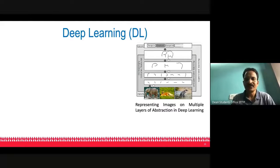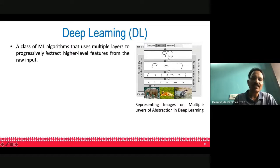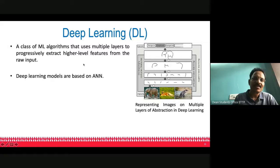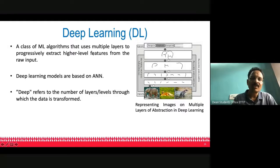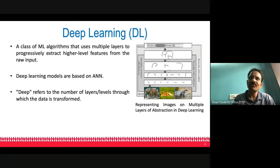Deep learning models are based on artificial neural networks, which mimic our brain. The word 'deep' in deep neural networks means there are a number of layers or levels through which data is transformed from very raw data to finer and finer features. Consider image processing as an example: at the bottom-most layer data is processed at the pixel level, next is the edge level, then identification of features like eyes and nose, then face identification, and higher levels identify complex features.